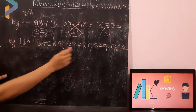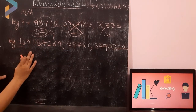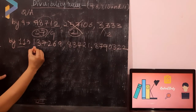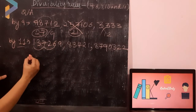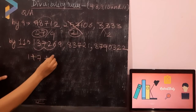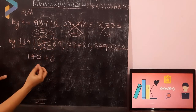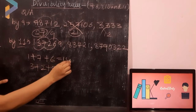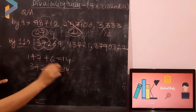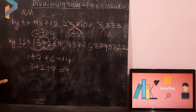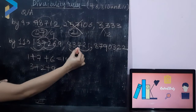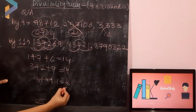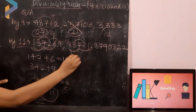Now I am going to check divisibility by 11 for 3 numbers. The rule of 11 says add the digits at odd and even places and subtract the results. For the first number, odd places: 1 plus 7 plus 6; even places: 3 plus 2 plus 9. Adding: 7 plus 1 is 8, 8 plus 6 is 14. And 9 plus 3 is 12, 12 plus 2 is 14. So 14 minus 14 is 0 — this number is divisible by 11. For the next number, odd places: 8 plus 7 plus 1 gives 16; even places: 3 plus 2 gives 5. 16 minus 5 is 11 — this is also divisible by 11.